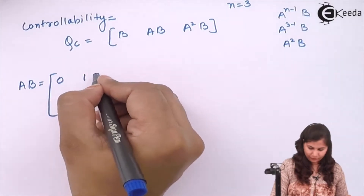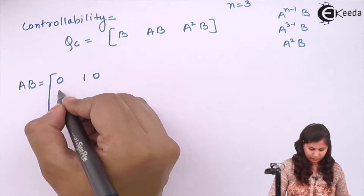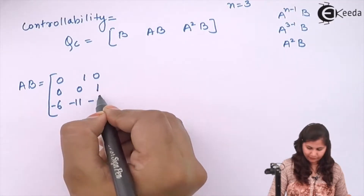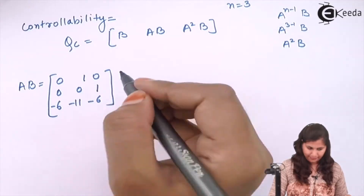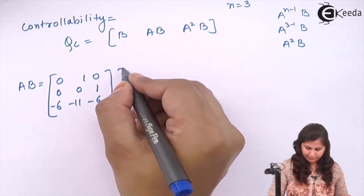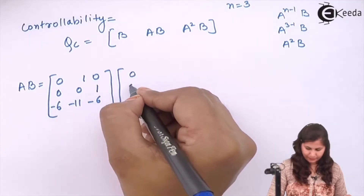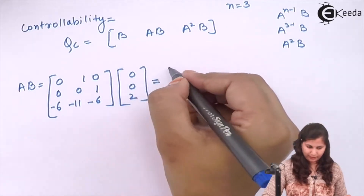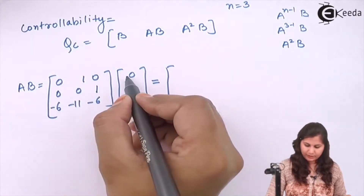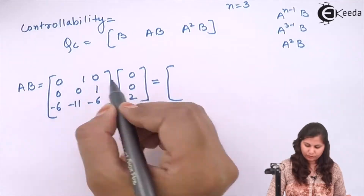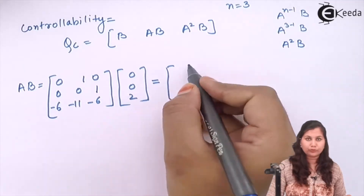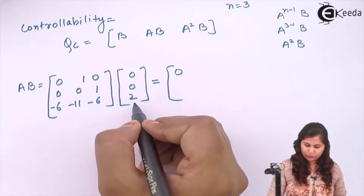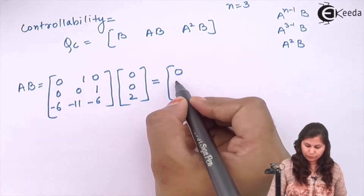The A matrix is [[0,1,0],[0,0,1],[−6,−11,−6]] multiplied with B = [0, 0, 2]ᵀ. Computing AB: first row gives 0·0 + 1·0 + 0·2 = 0; second row gives 0·0 + 0·0 + 1·2 = 2; third row gives −6·0 − 11·0 − 6·2 = −12. So AB = [0, 2, −12]ᵀ.